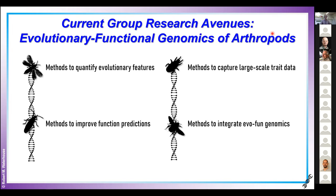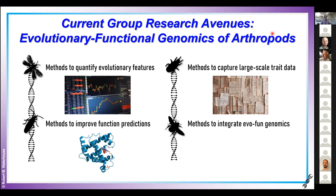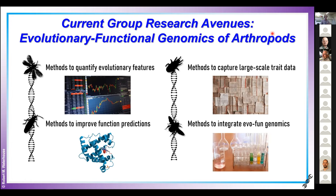I try to summarize it with four major themes, where you'll see a heavy emphasis on methods — the bioinformatics side of things — including methods to quantify what we call evolutionary features: how genes evolve over evolutionary time across arthropod genomes in terms of sequence and copy number, methods to improve gene functional predictions, methods to capture large-scale arthropod ecological and organismal trait data, and linking evolutionary and functional genomics with transcriptomics efforts.